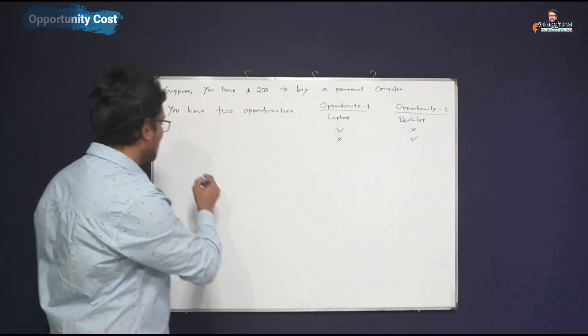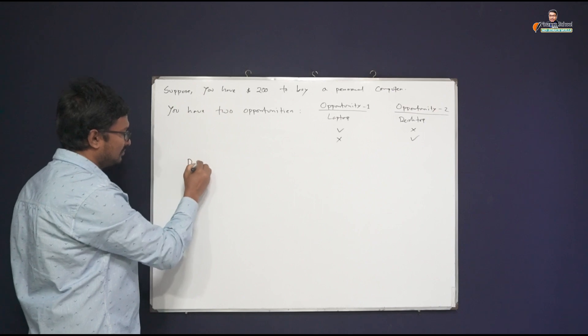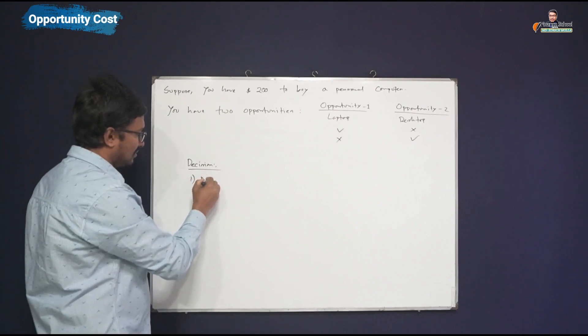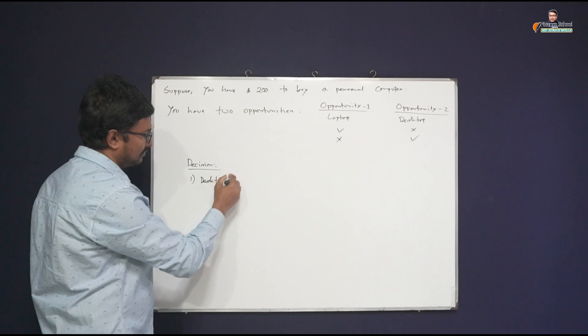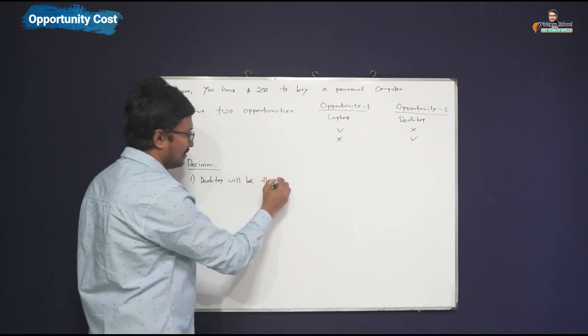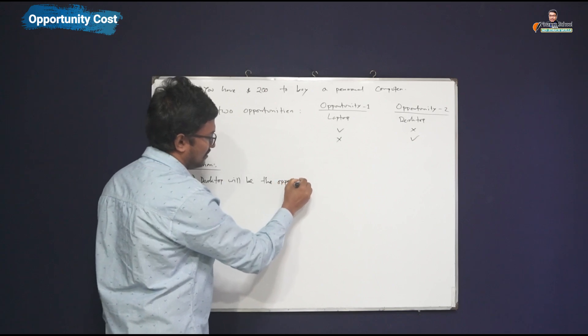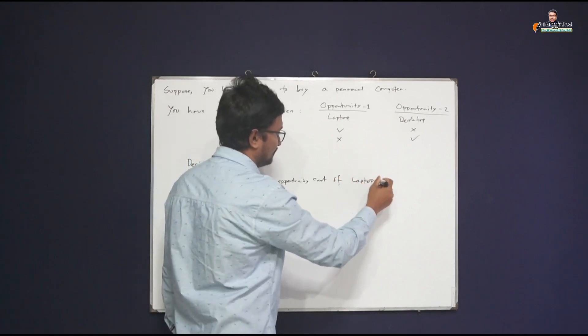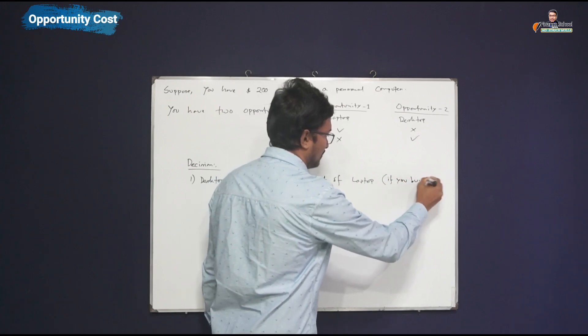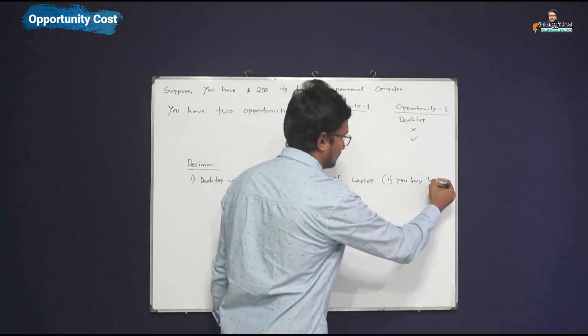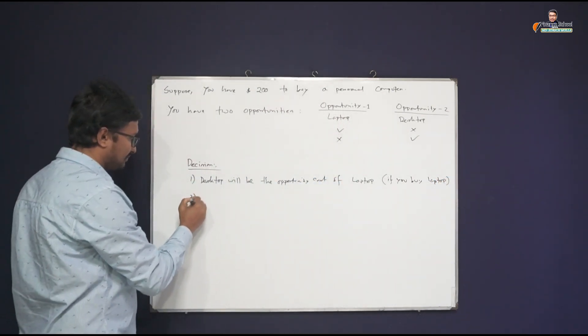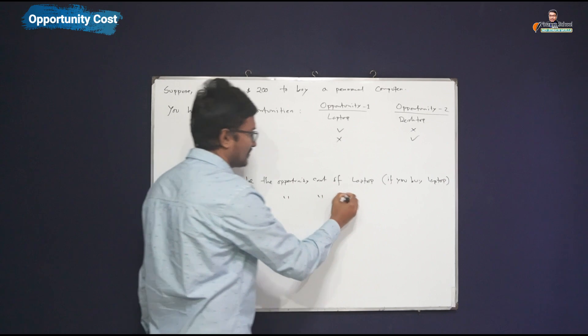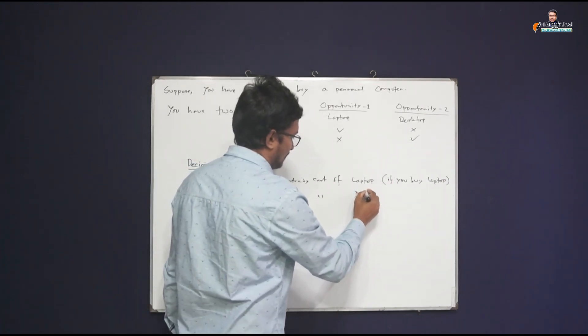Therefore we can write: Decision number one - desktop will be the opportunity cost of laptop if you buy the laptop. On the other hand, if you buy the desktop, laptop will be the opportunity cost of desktop.